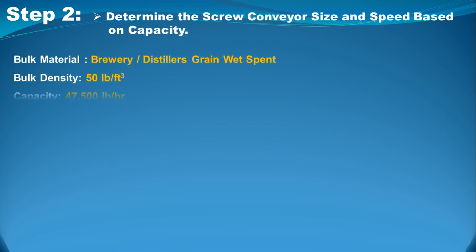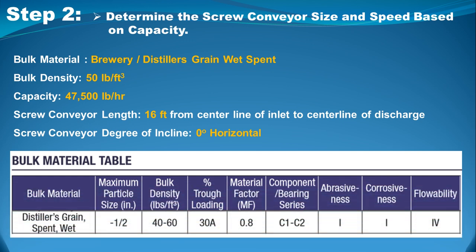Step two is to determine the screw conveyor size and speed based on capacity. The inputs are the bulk material type, bulk density, required capacity, conveyor length, and degree of incline. Based on the table, a bulk density of 50 pounds per cubic foot lies in the range of 40 to 60. The trough loading design is 30A with a corresponding material factor of 0.8, and the bearing series is C1 to C2.